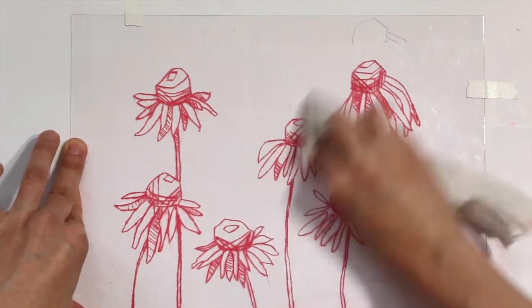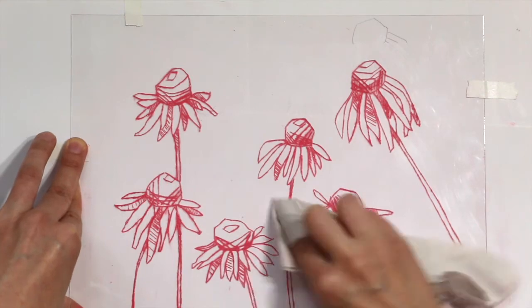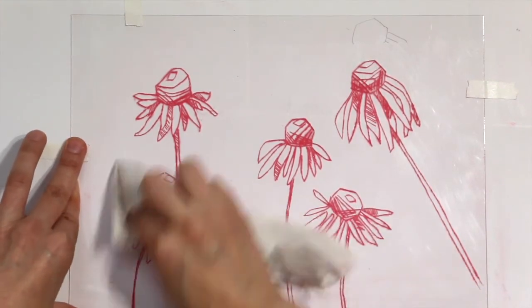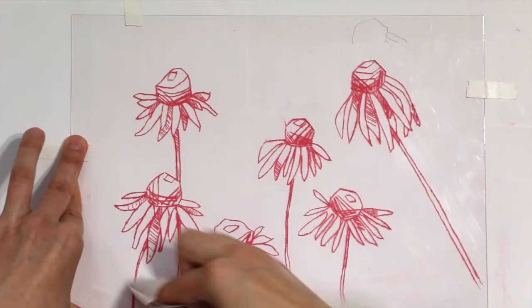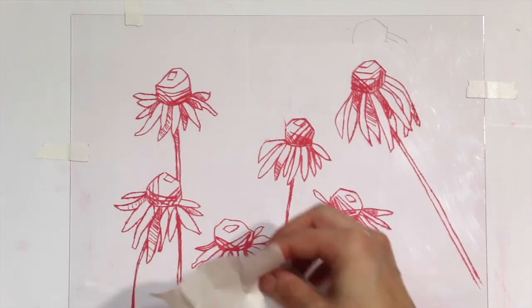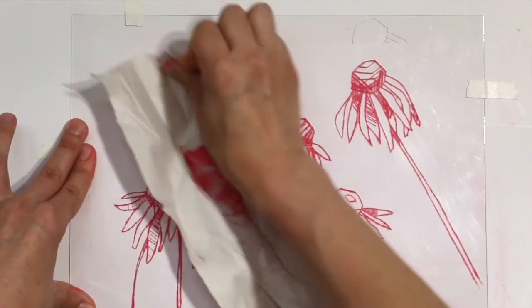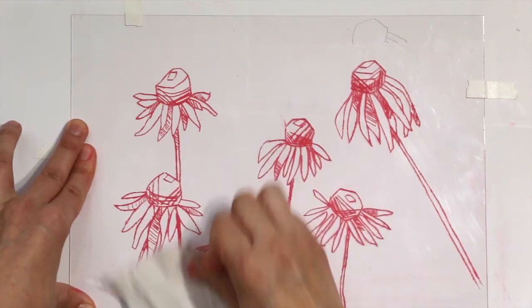Now I'm ready to print and I'm gonna lay one of my damp pieces of paper that I've been soaking directly on this and press hard with a brayer so that will hopefully make a print.